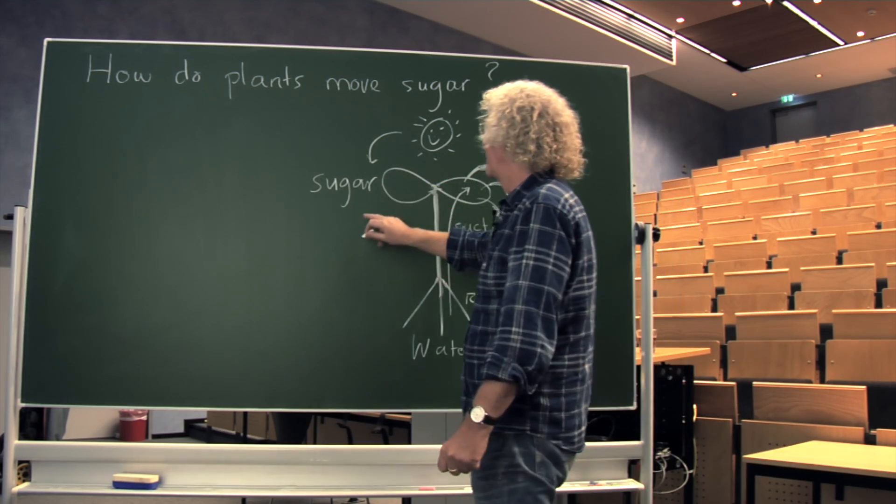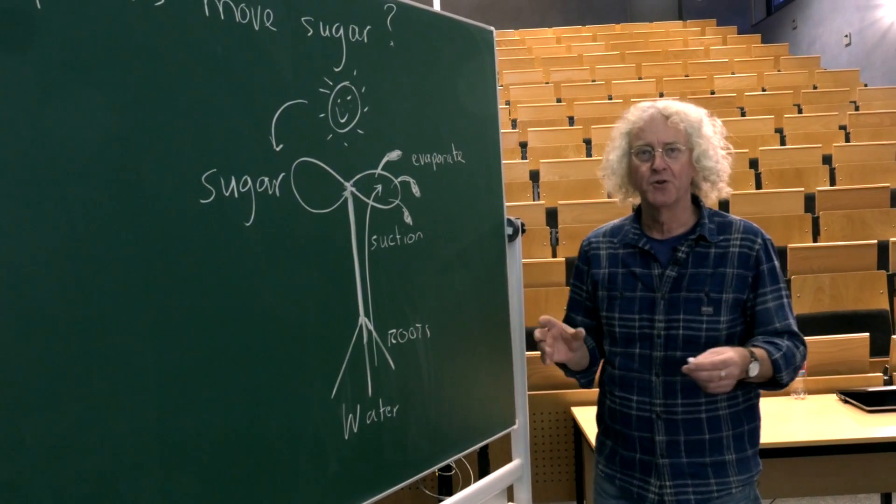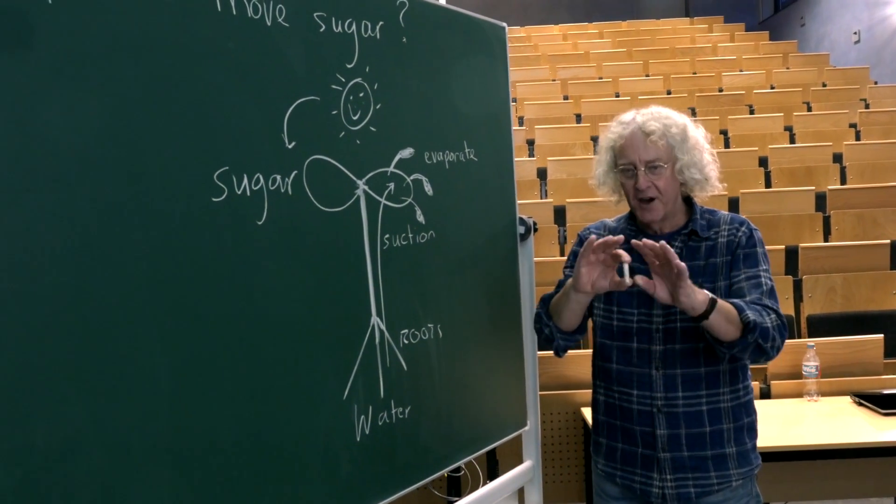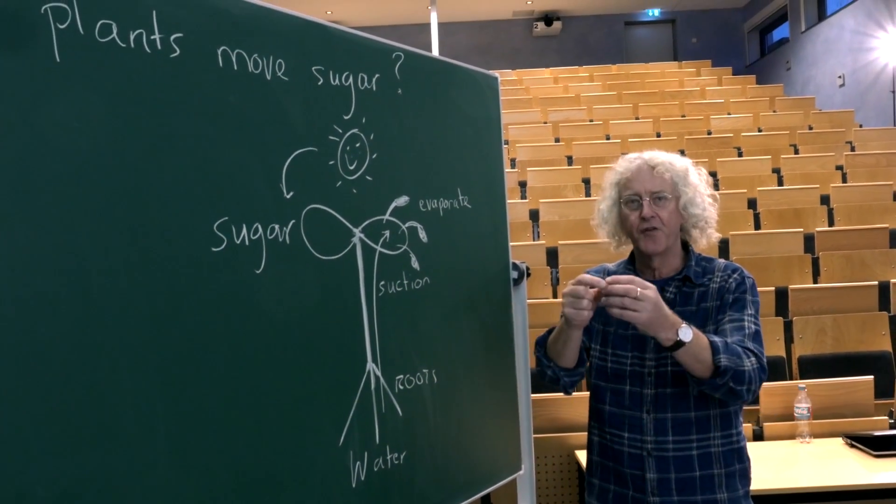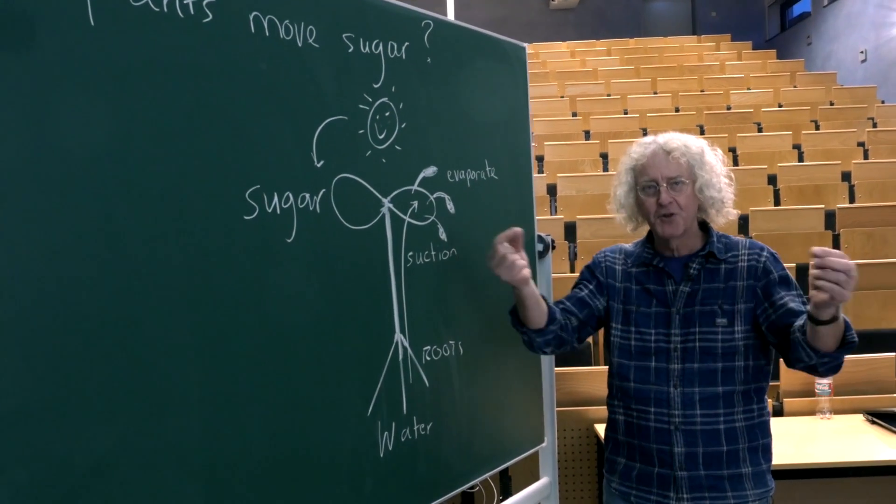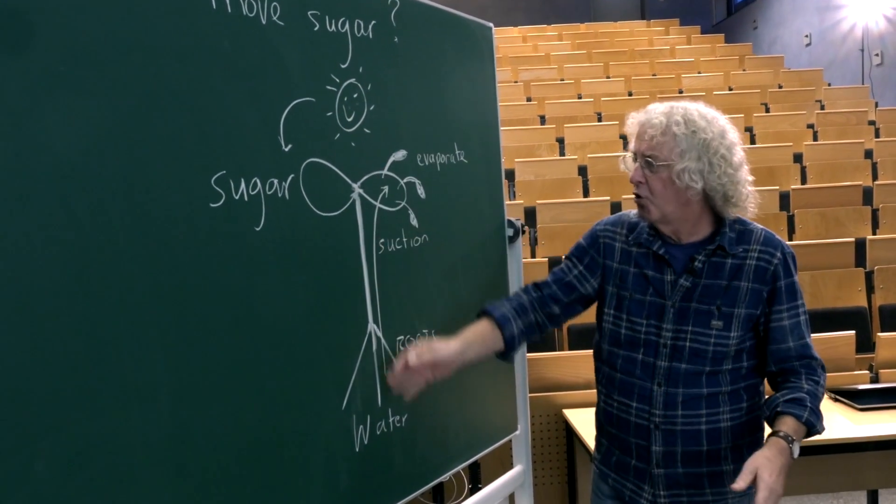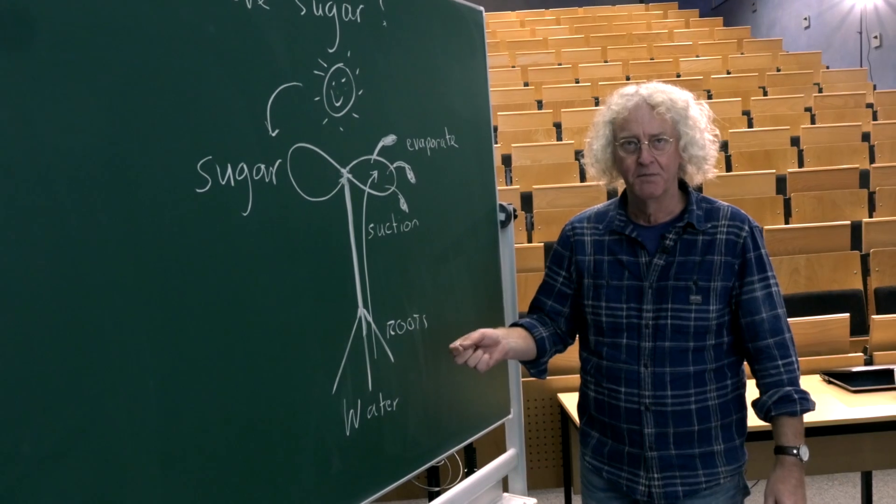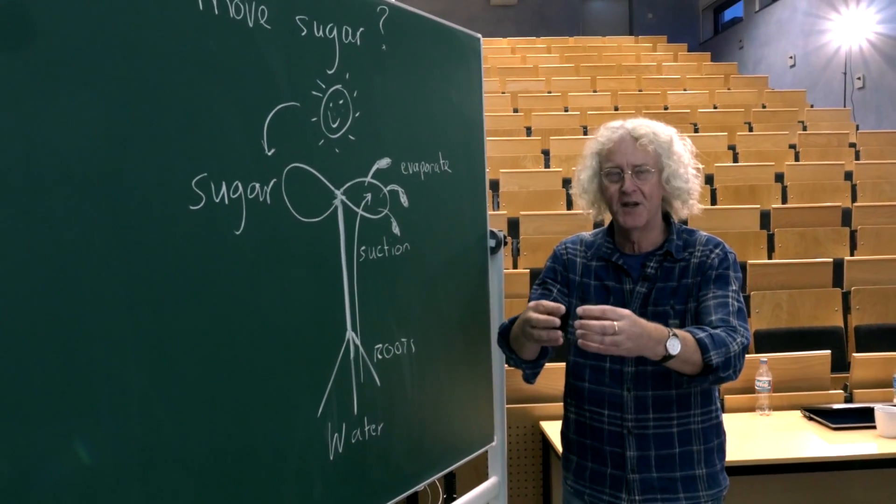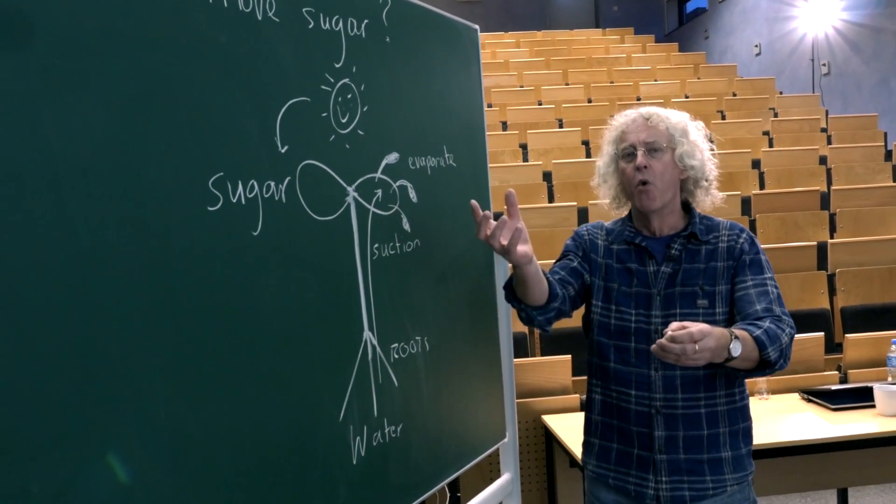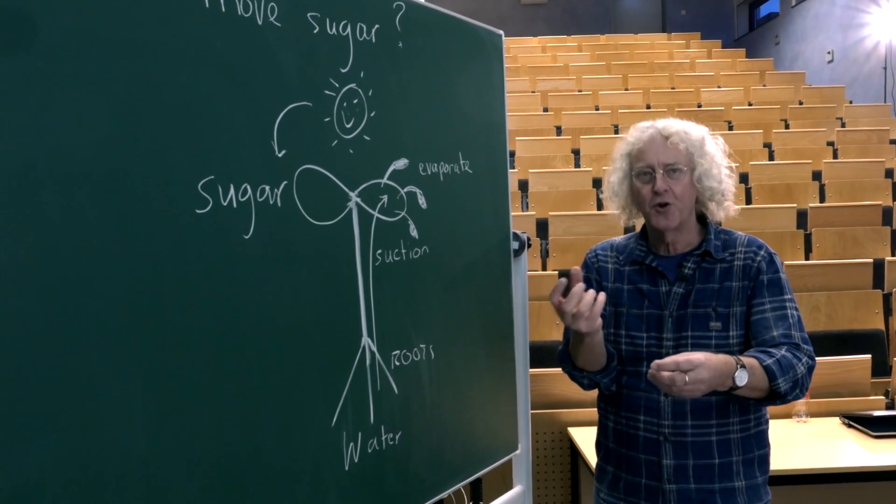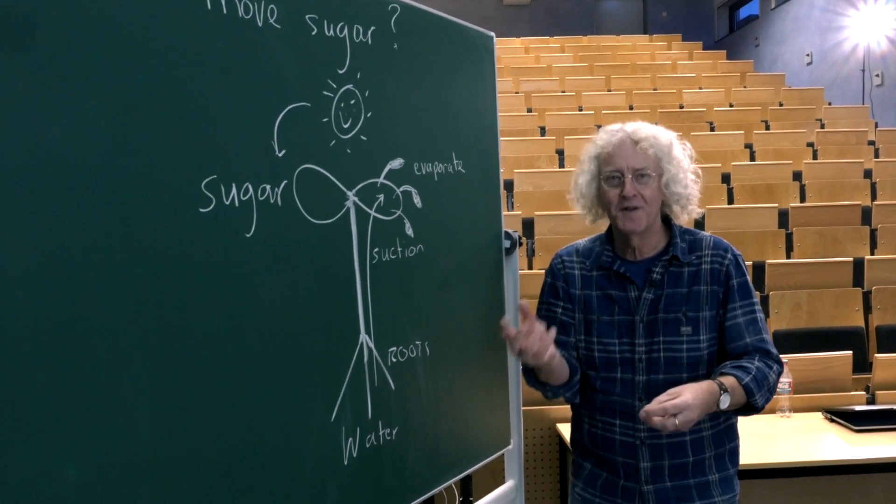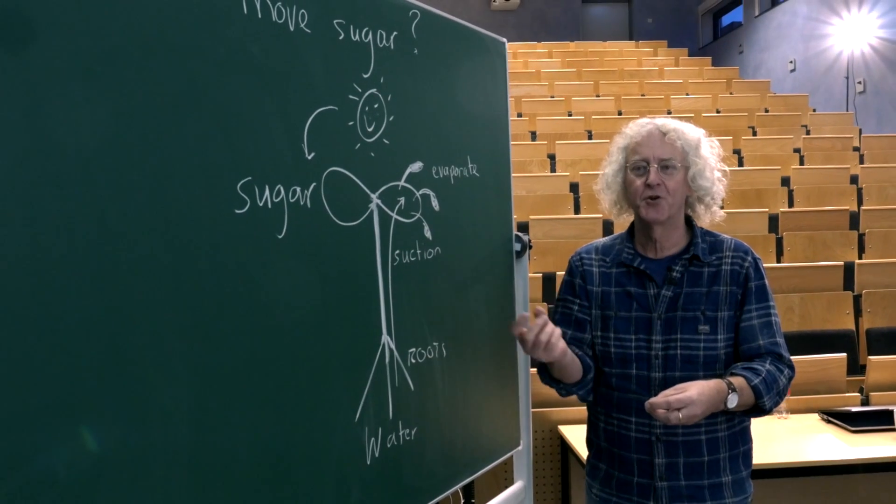The sugar is pumped into special cells called the phloem. They are in the leaf veins and the phloem makes a continuous row of living cells all the way through the plant. So sugar is pumped into the phloem. Water is pulled after it. This is called osmosis and I'm not going to explain osmosis here. Ask your teacher.